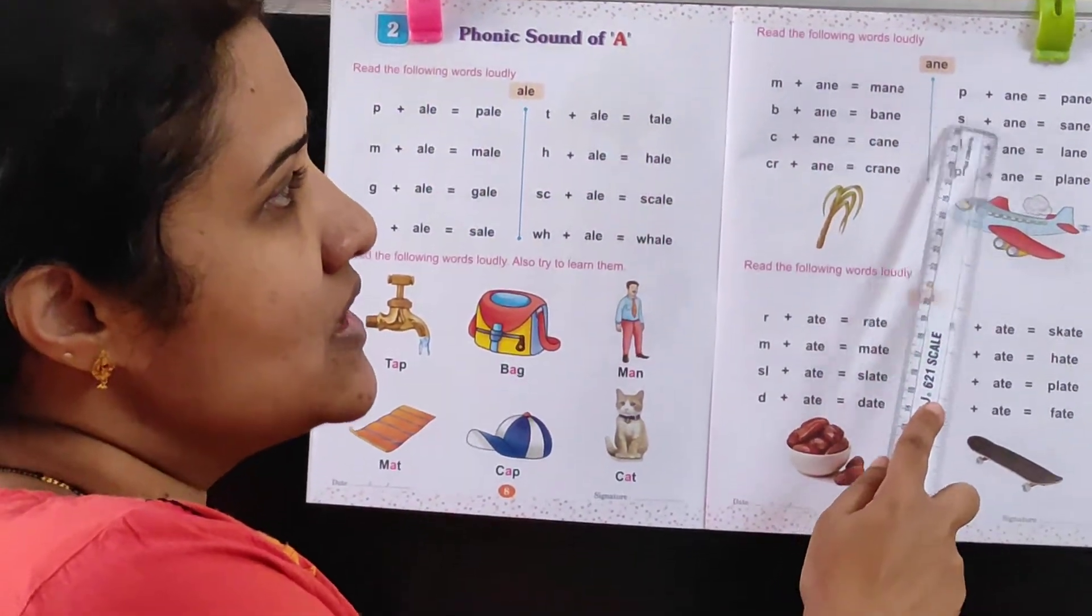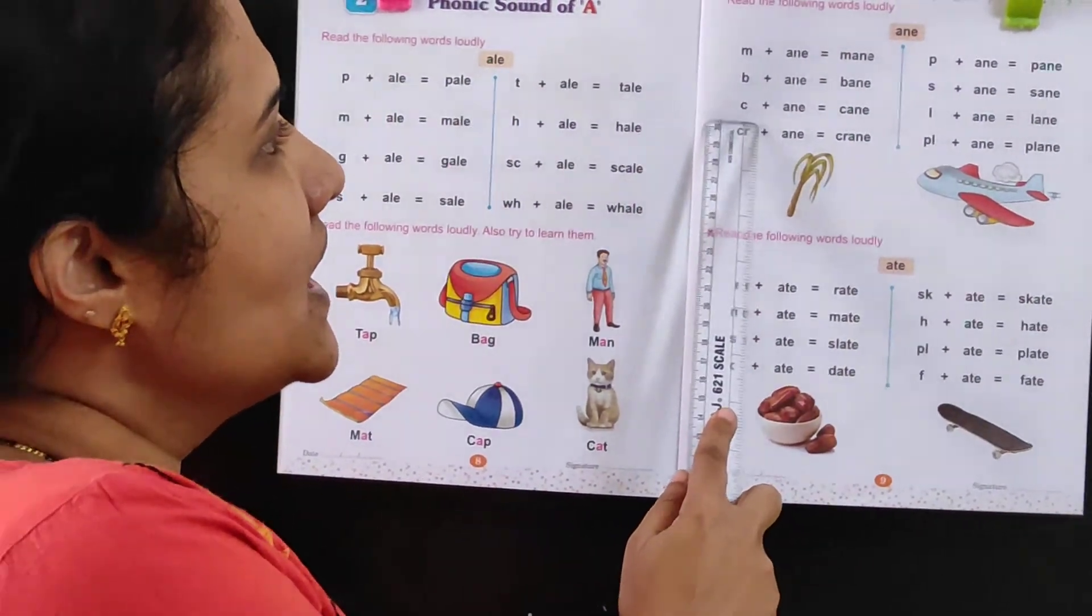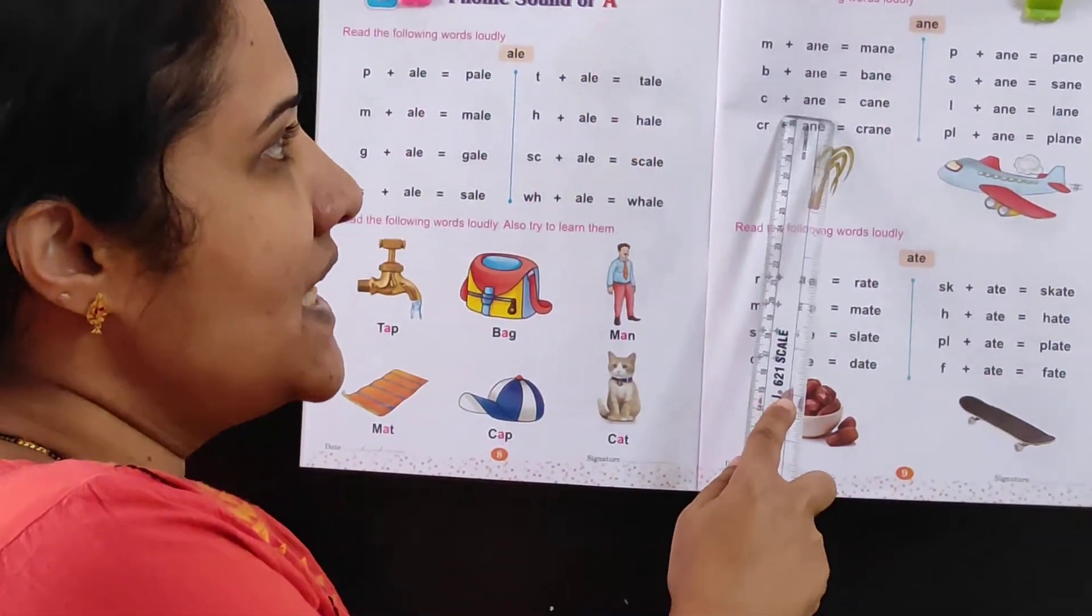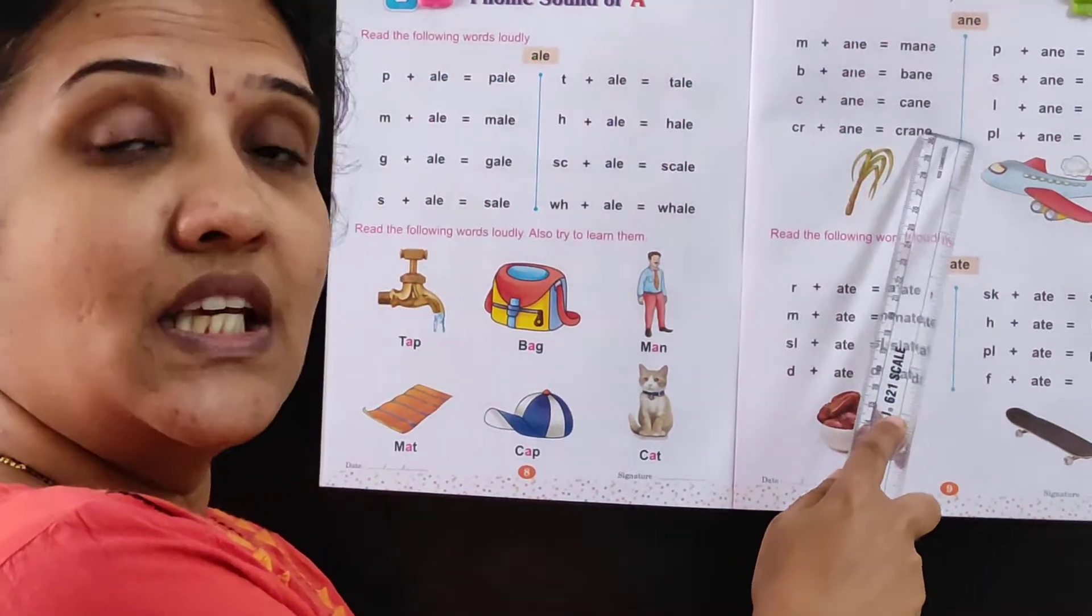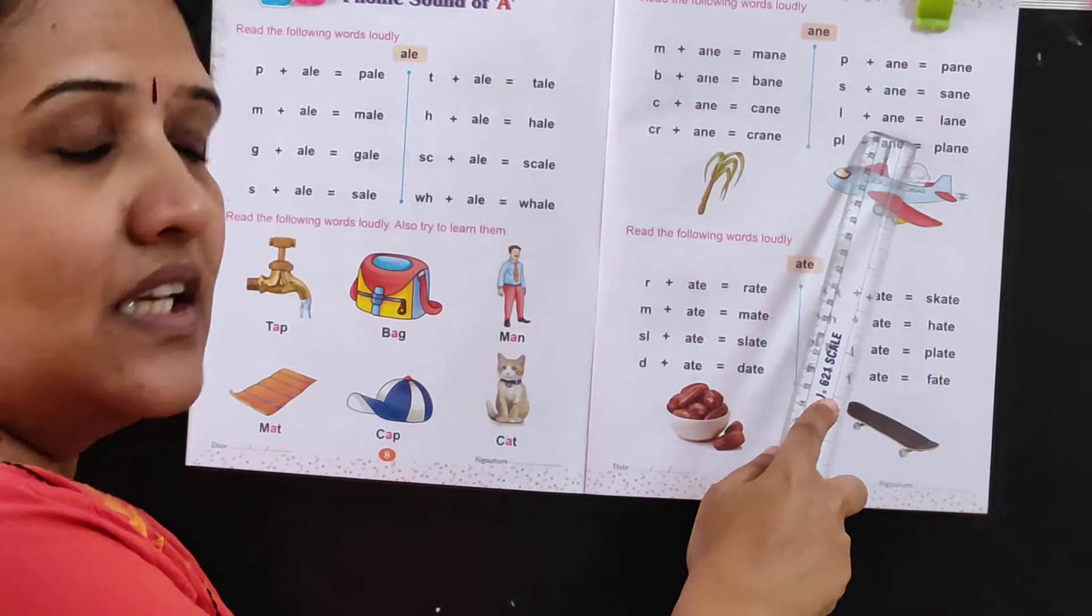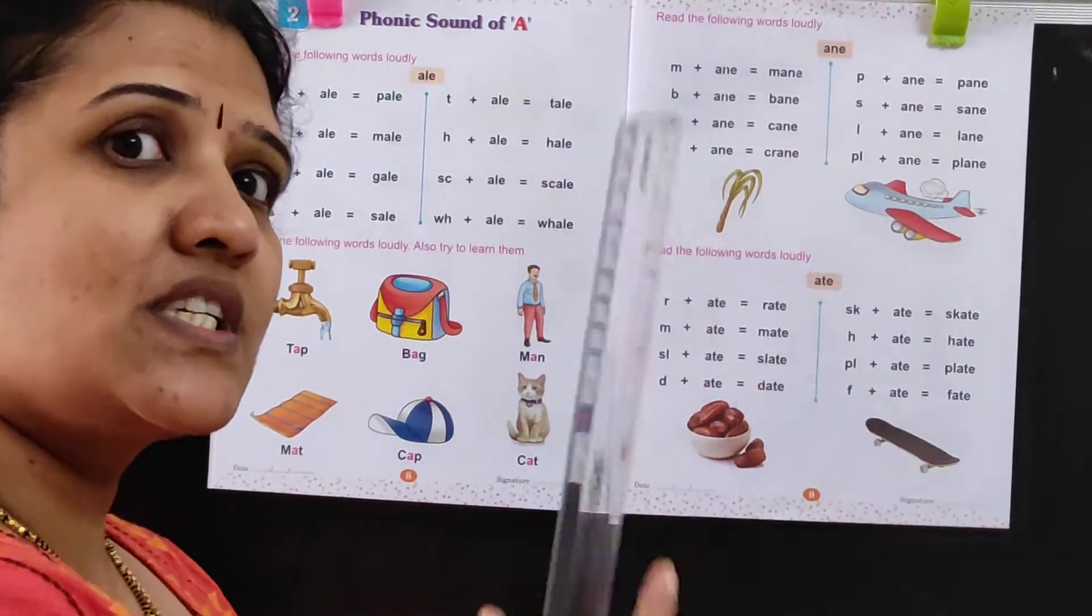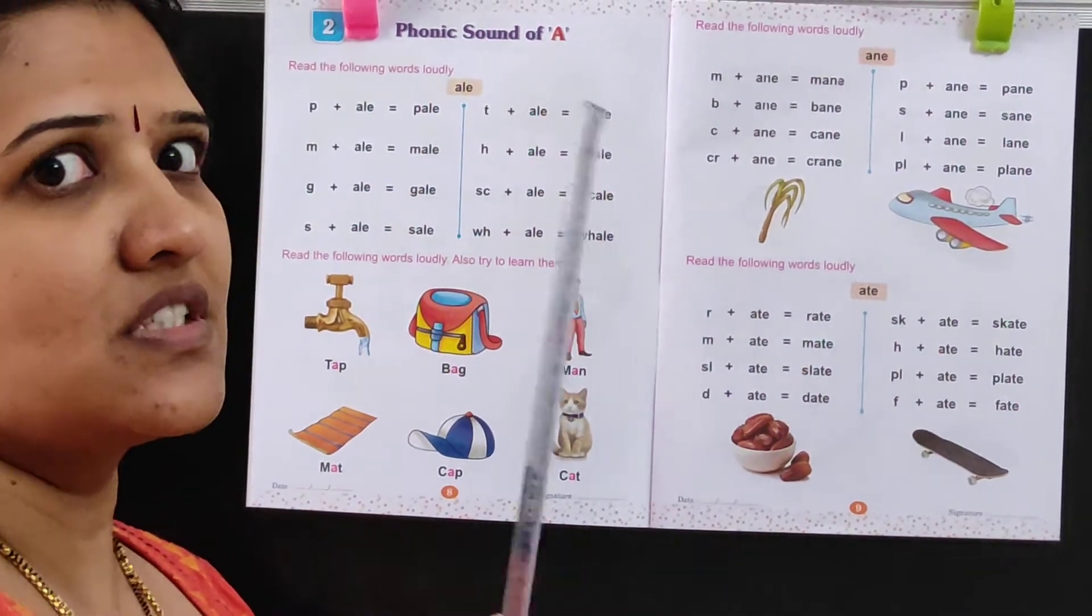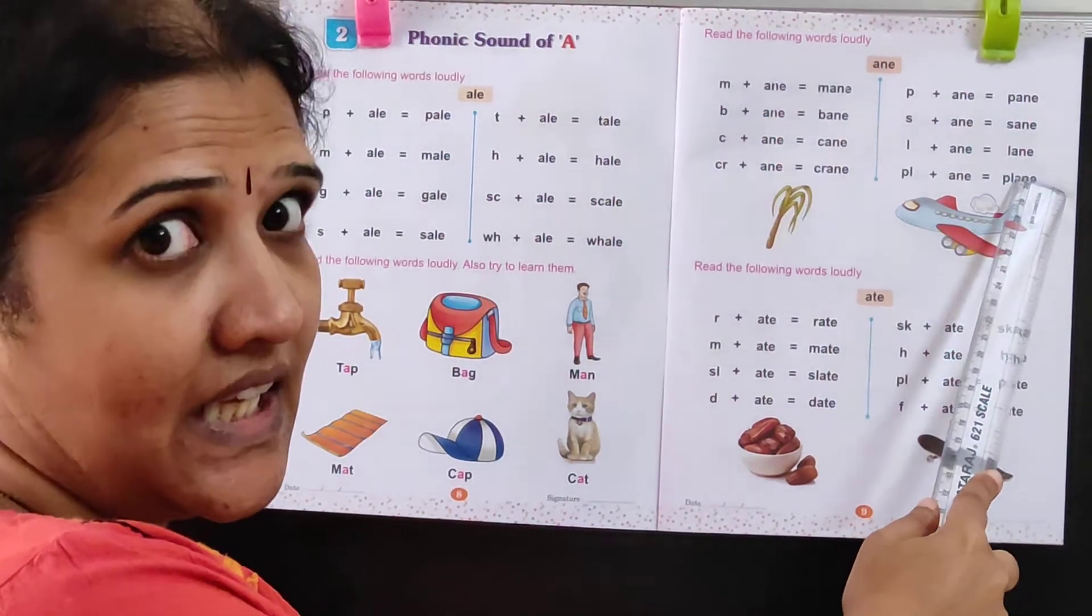S plus A-N-E is sane. C plus A-N-E is cane, C-A-N-E, cane. L plus A-N-E is Lane, L-A-N-E, Lane. You stay in lanes, right? Third cross, fourth cross, these are all lanes.